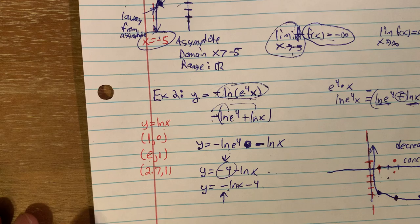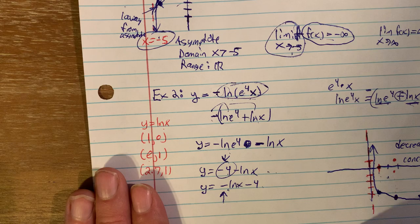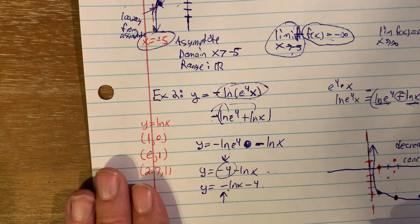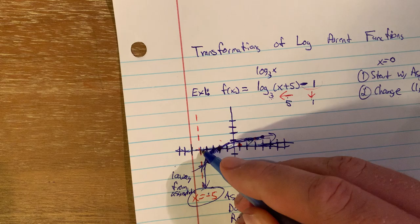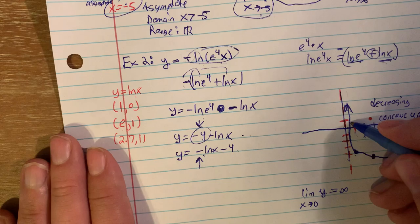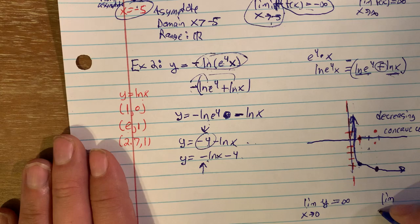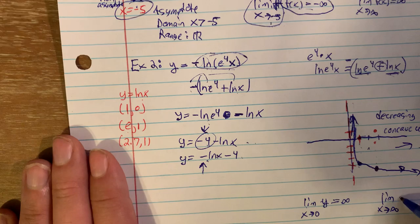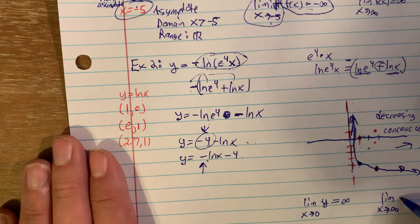Following the asymptote, this function is now decreasing and concave up — it bends upward because of the reflection. The domain and range and asymptote location don't change. But the limits do change: as x goes toward 0, the y values now go toward positive infinity (they go up instead of down); and as x goes toward infinity, the y values now go down to negative infinity.